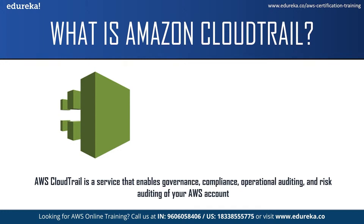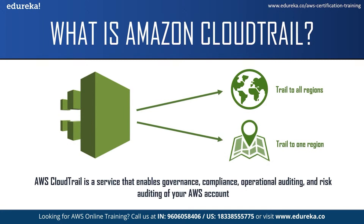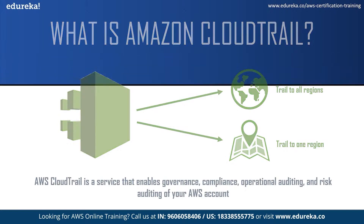You can create two types of trails for an AWS account. The first is a trail that applies to all regions. When you create this type of trail, CloudTrail records events in each region and delivers the log files to an S3 bucket that you specify. If a new region is added after you create the trail, it is automatically included and events in that region are logged. It is best practice to create a trail in all regions. The second type is a trail that applies to only one region — CloudTrail records events in that region only and delivers log files to an S3 bucket you specify. Single-region trails can only be created using the AWS CLI, and multiple single-region trails can deliver log files to the same or separate S3 buckets.